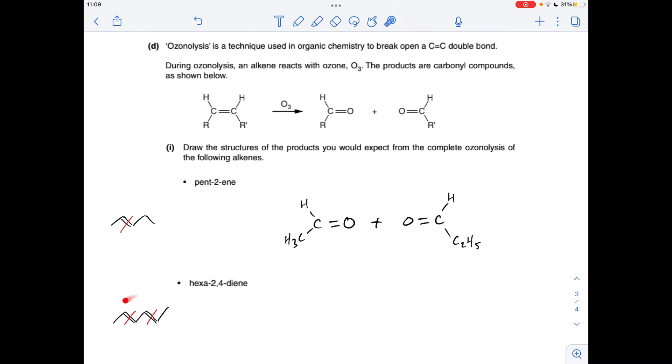And moving on to hexa-2,4-diene, so again the skeletal formula just to help. So we'll break the two carbon-carbon double bonds. You'll notice that this part and this part are the same so we're going to get two identical molecules where you've just got CH3 C double bond O and this bit here is going to be CH double bond O CH double bond O, so we get those.